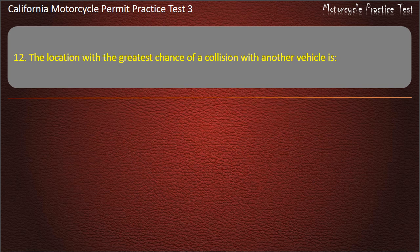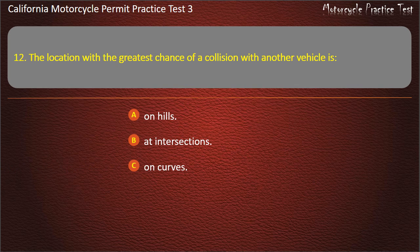Question 12. The location with the greatest chance of a collision with another vehicle is: on hills, at intersections, on curves, or in parking lots. Answer: At intersections.